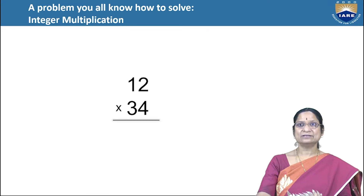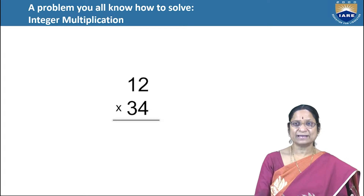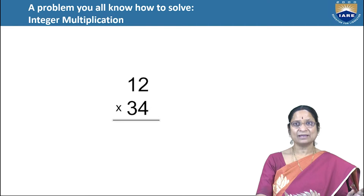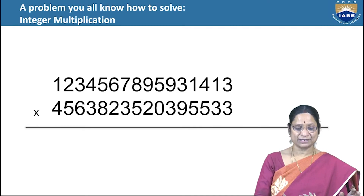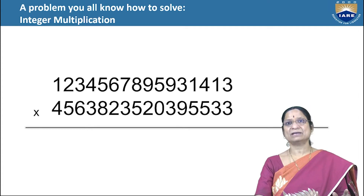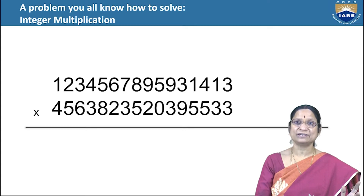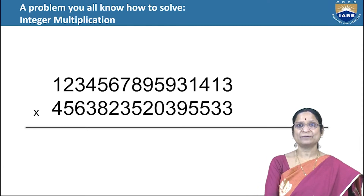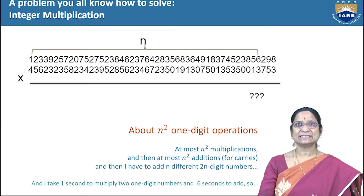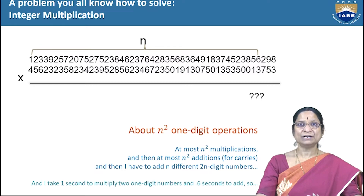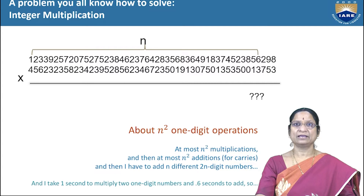Consider a small example: simple integer multiplication. If we multiply numbers having many digits — say 17 or 18 digits — we first multiply by each digit and then add the results. With 18 digits, we perform 18 multiplications and 18 additions. As n (the number of digits) keeps increasing, the time taken increases drastically, in a quadratic manner — at most n² multiplications and n² additions are required.